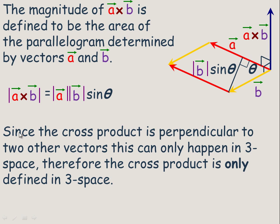As I was saying, since the cross product is perpendicular to both those two vectors, that can only happen in three dimensional space. So there's no cross product in two dimensional space.